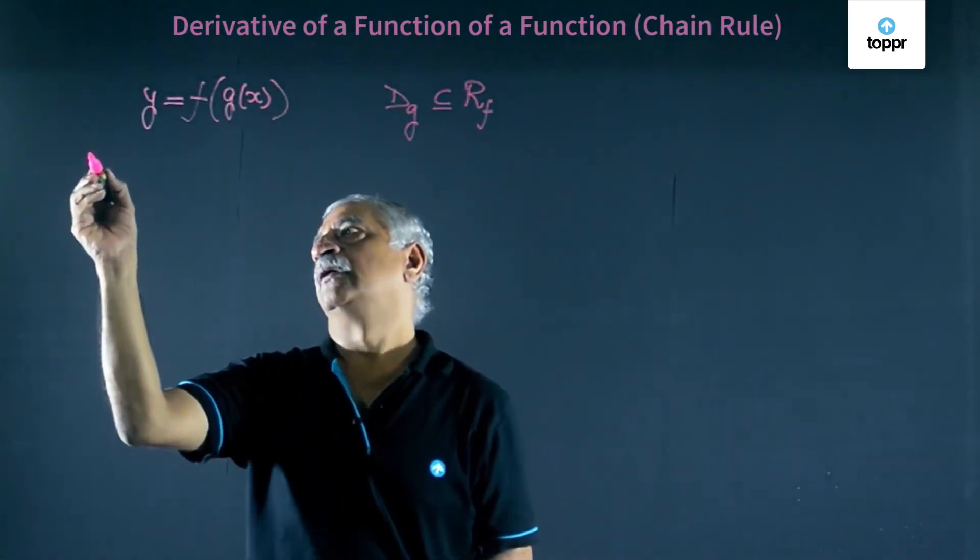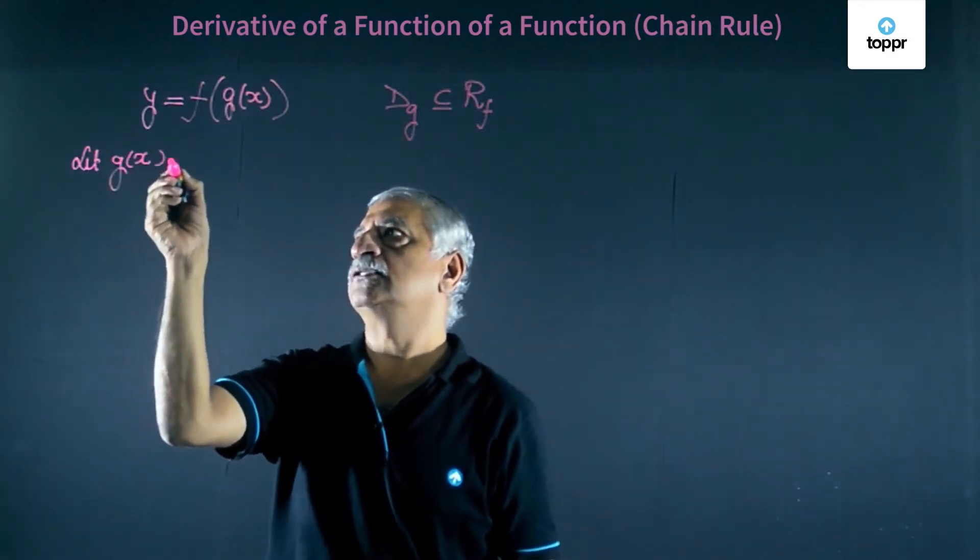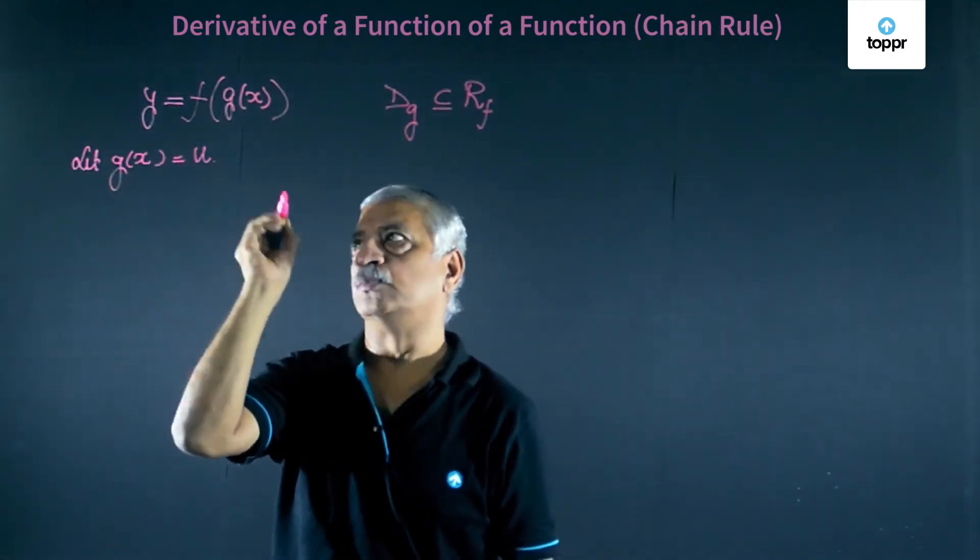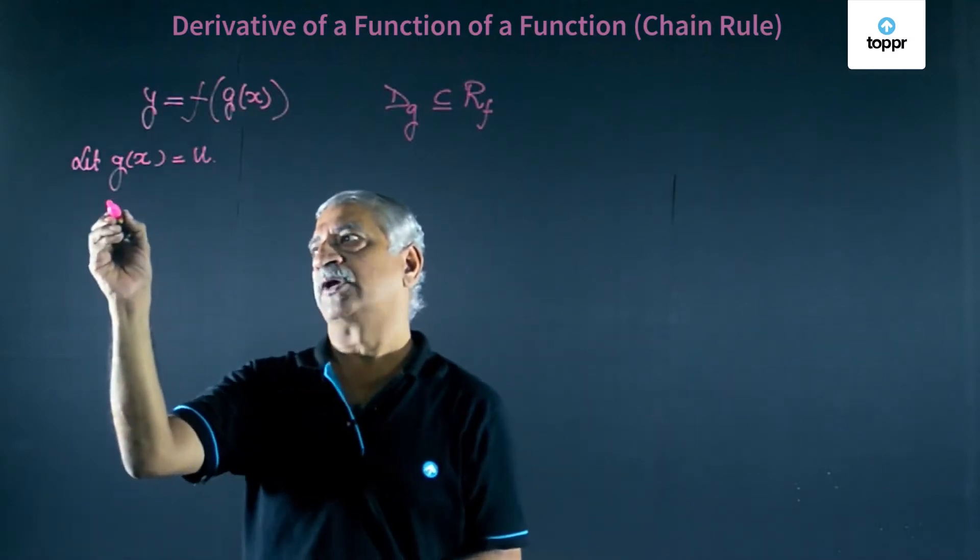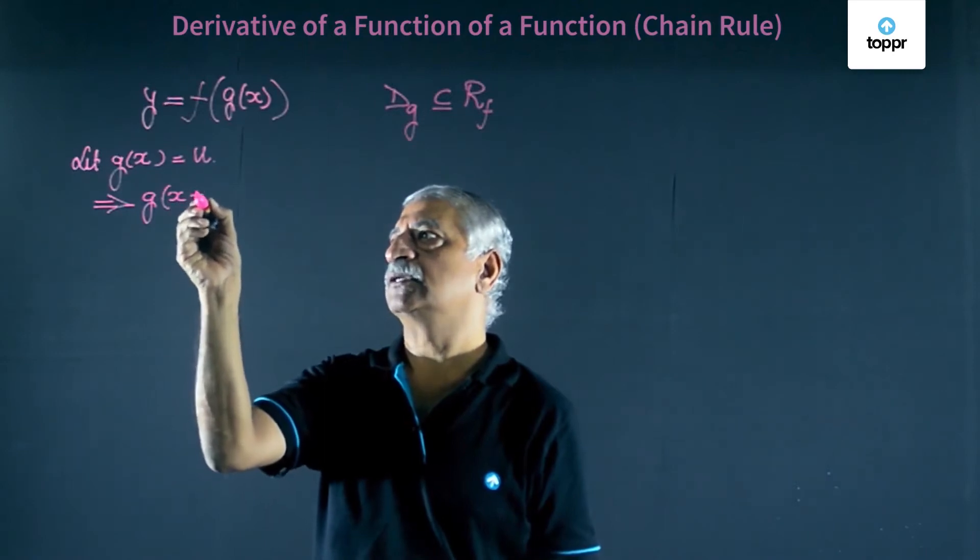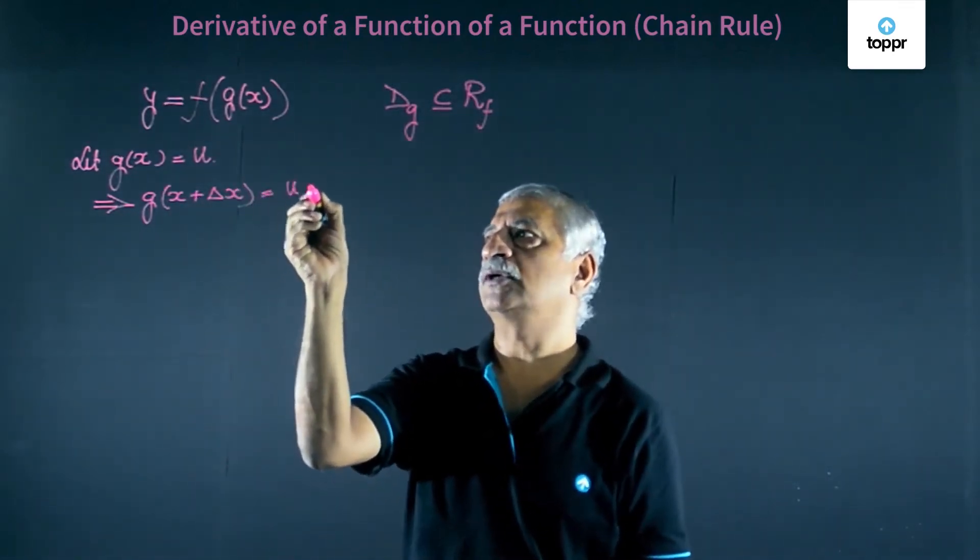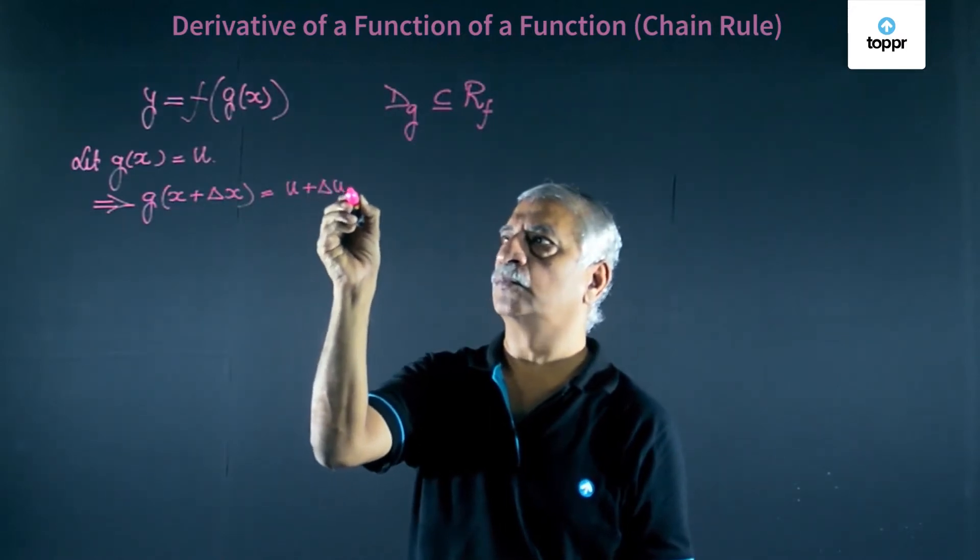Well, let's say let g of x be equal to u. This implies g of x plus delta x is equal to u plus delta u.